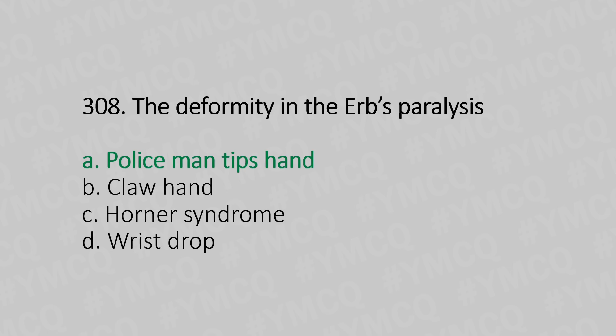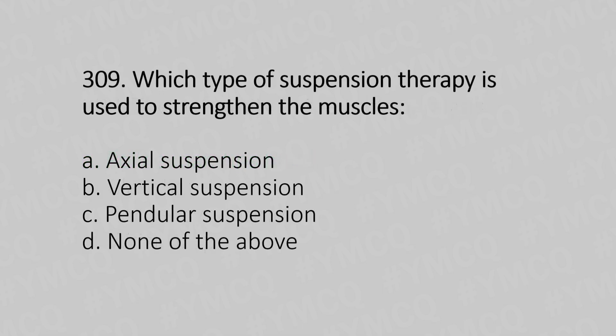Question 309: Which type of suspension therapy is used to strengthen the muscle? Option A: axial suspension. Option B: vertical suspension. Option C: pendular suspension. Option D: none of the above. The answer is Option C, pendular suspension.